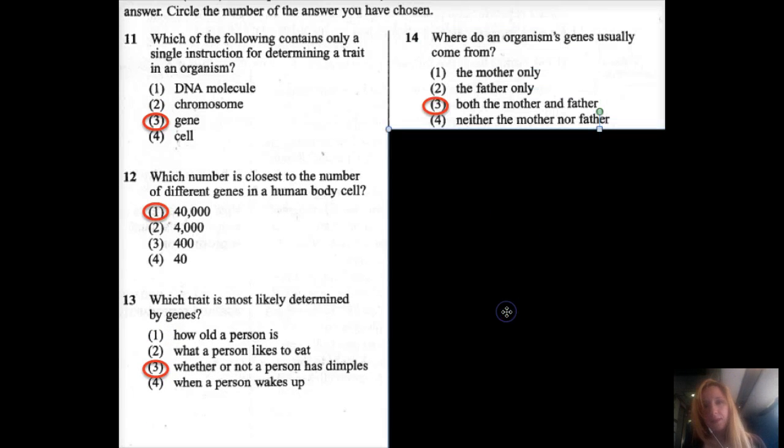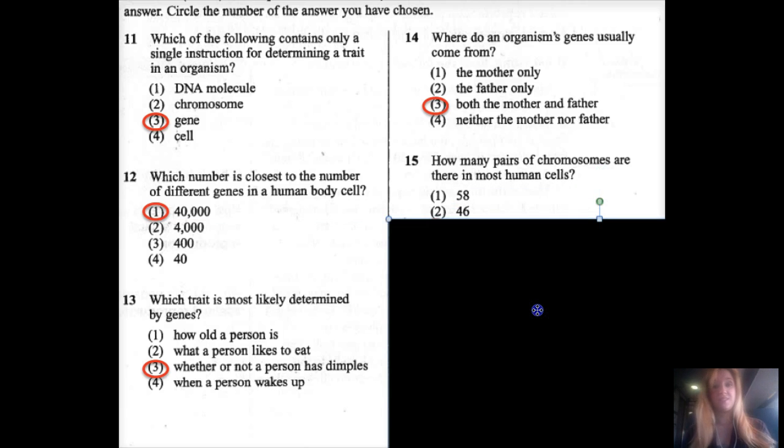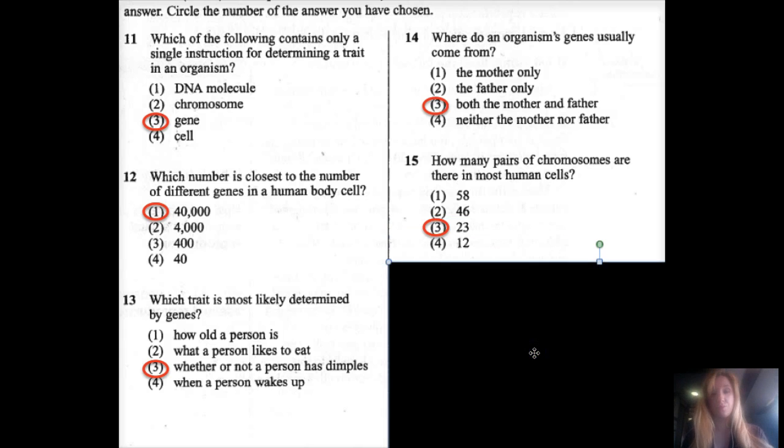Number fourteen: Where do an organism's genes usually come from? One: the mother. Two: the father. Three: both the mother and the father. Four: neither the mother nor father. Right now it's safe to assume they're talking about sexual reproduction. Sometimes people say we look more like a mother, sometimes we look more like a father—that could be because of dominant versus recessive traits. Number fifteen: How many pairs of chromosomes are there in most human cells? We have 23 pairs and then 46 single ones in our body cells. We have 23 single chromosomes in our sex cells. So 23 pairs in our body cells, 23 chromosomes in our sex cells, or 46 chromosomes in our body cells.